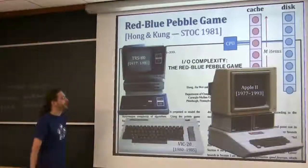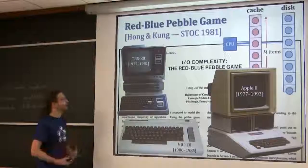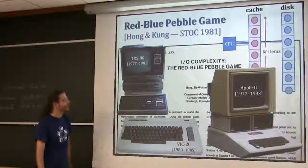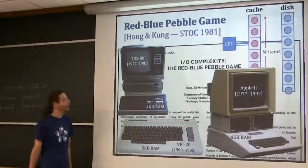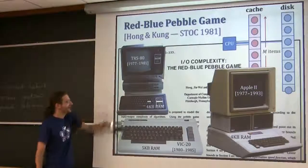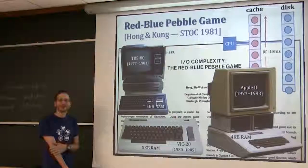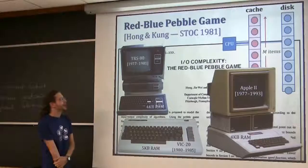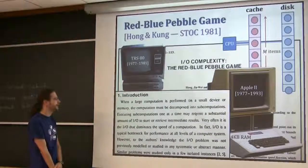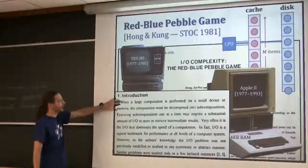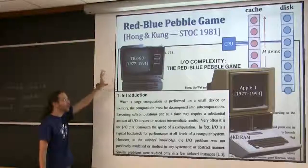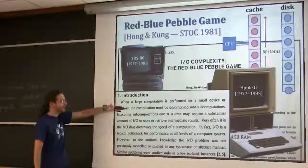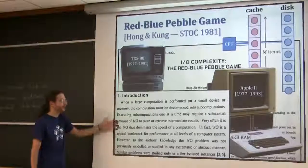This is the state of the art in computing at the time - the personal computer revolution was happening. They had the Apple II, TRS-80, VIC-20, all of which originally had about four kilobytes of RAM. Disks could store maybe 360K or so. When a large computation is performed on a small device - at that point small devices were becoming common - you must decompose those computations into subcomputations. This is going to require a lot of I/O, so how do we minimize I/O?